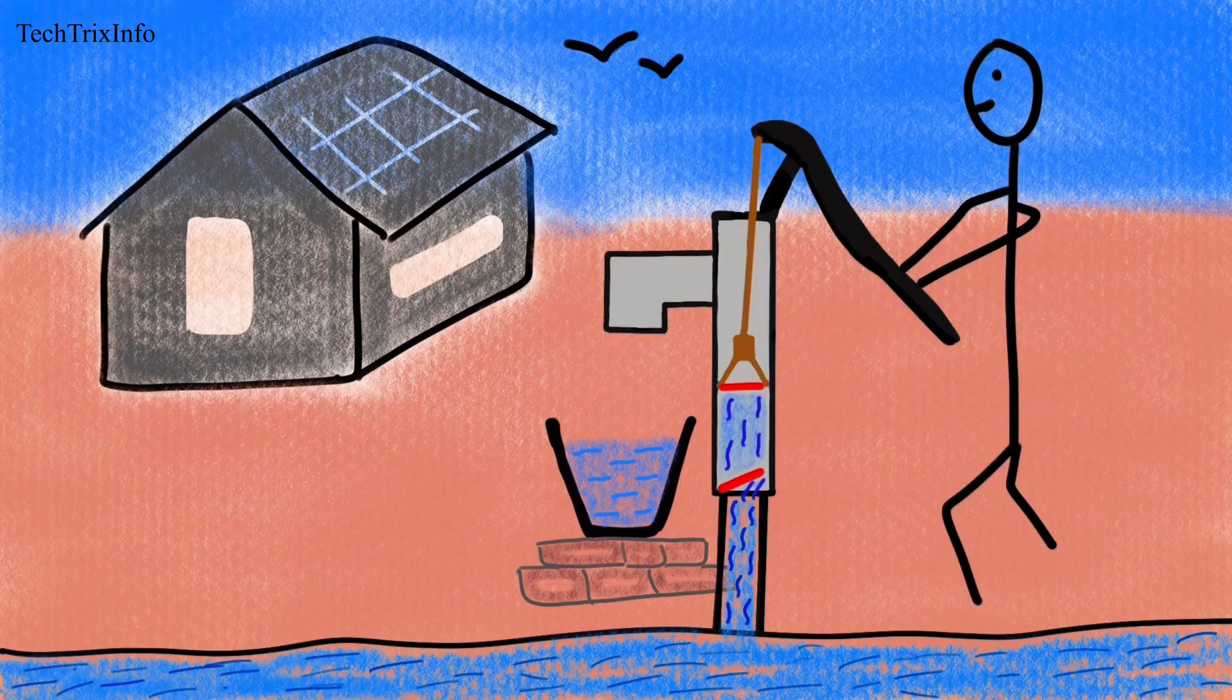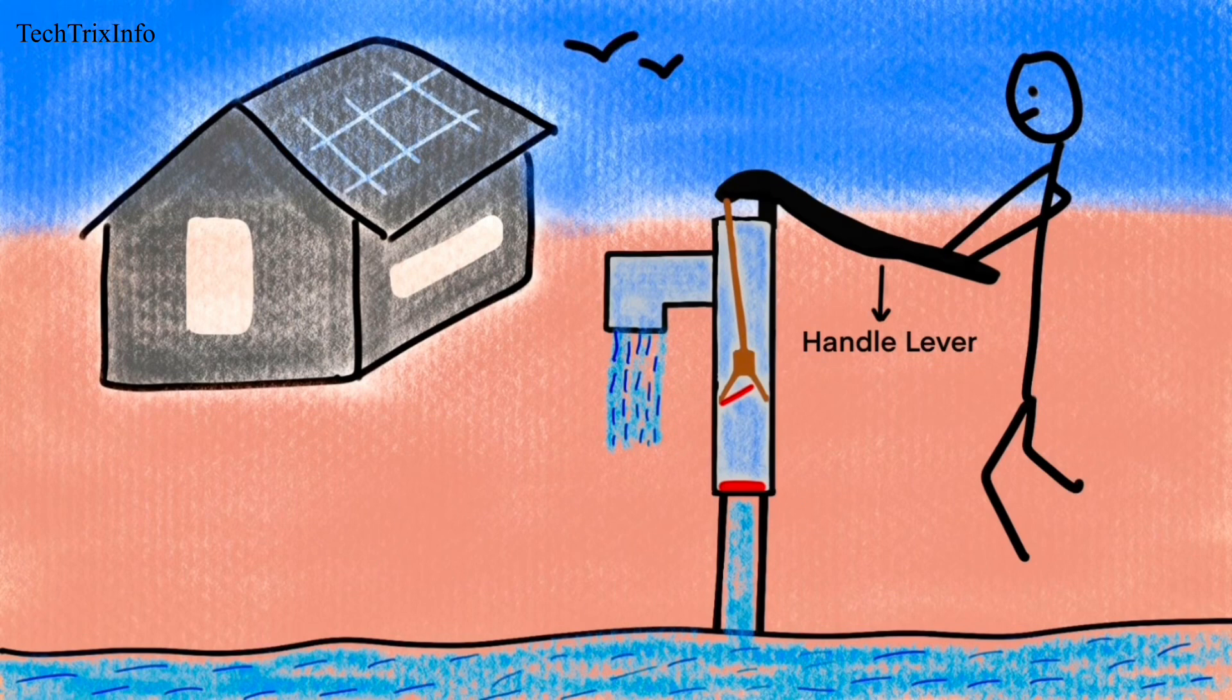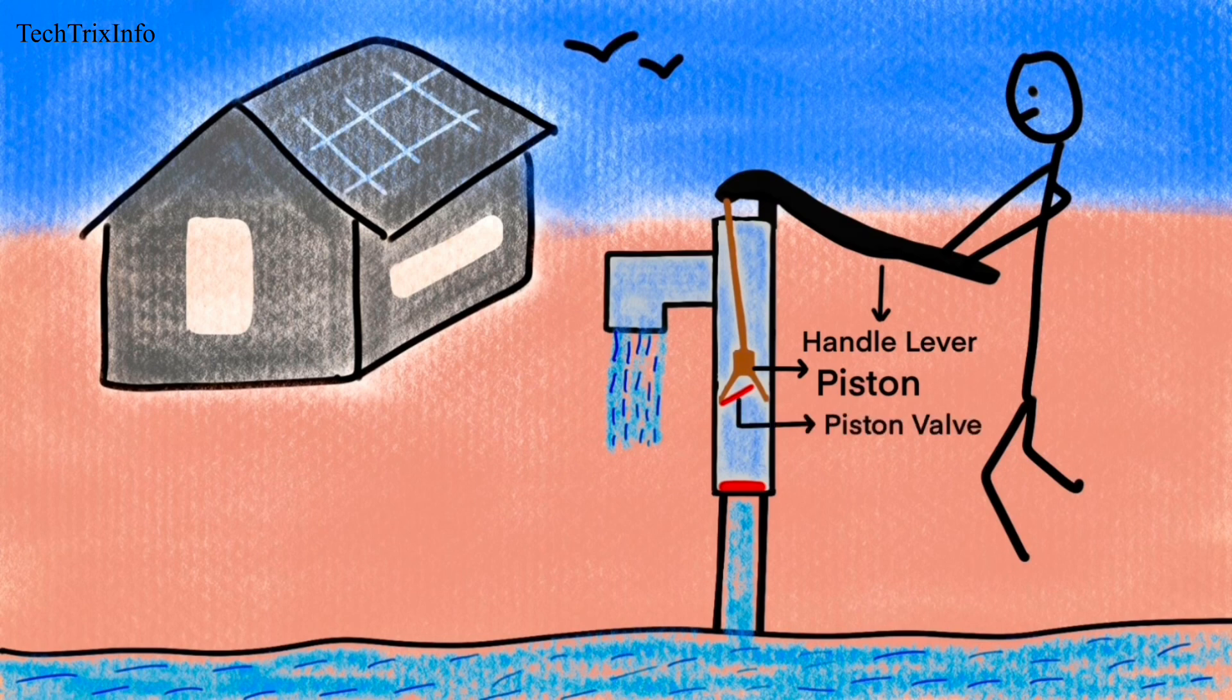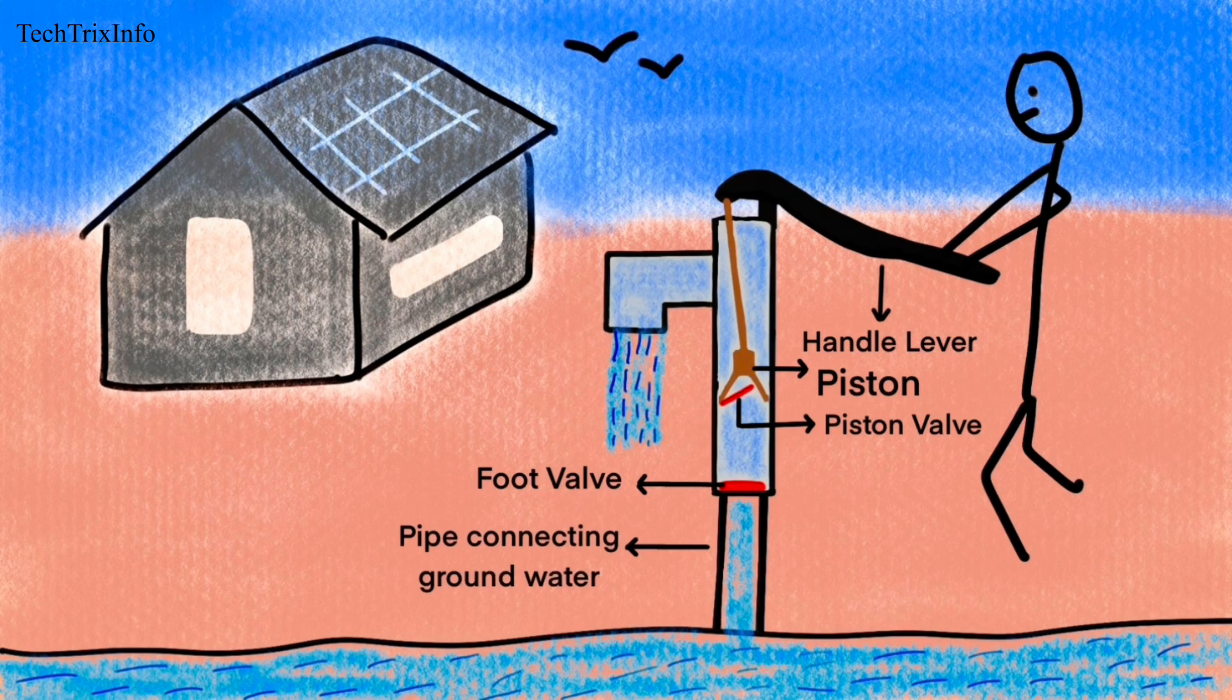First, let's identify the components. That's the handle lever which is used to manually pump the fluid. Then we have the piston which moves when the handle lever is moved. We have a valve which is a piston valve connected to the piston—it's a non-return valve. Then we have the foot valve, that is also a non-return valve. Then we have the pipe connecting the groundwater where the water is sucked in.